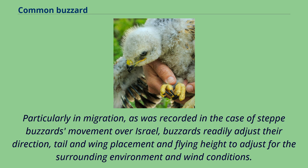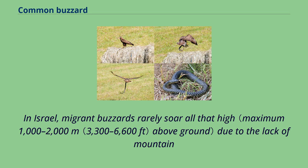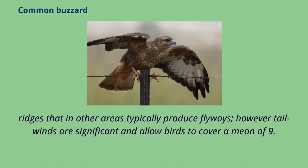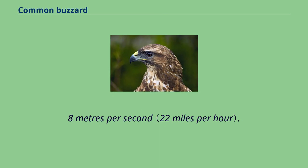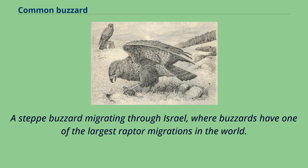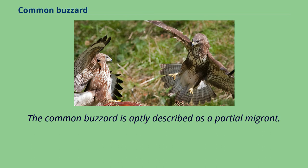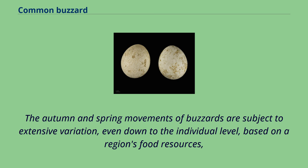In Israel, migrant buzzards rarely soar all that high above ground due to the lack of mountain ridges that in other areas typically produce flyways, however tailwinds are significant and allow birds to cover a mean of 9.8 meters per second. The common buzzard is aptly described as a partial migrant. The autumn and spring movements of buzzards are subject to extensive variation, even down to the individual level, based on a region's food resources, competition, extent of human disturbance and weather conditions.